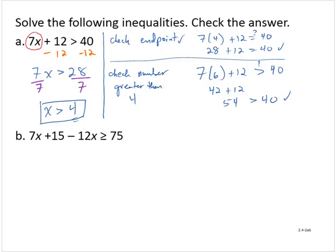Exercise b. We have 7x plus 15 minus 12x is greater than or equal to 75. The first thing I notice is that there are like terms on the left-hand side, so let me simplify that. I have negative 5x plus 15 is greater than or equal to 75.